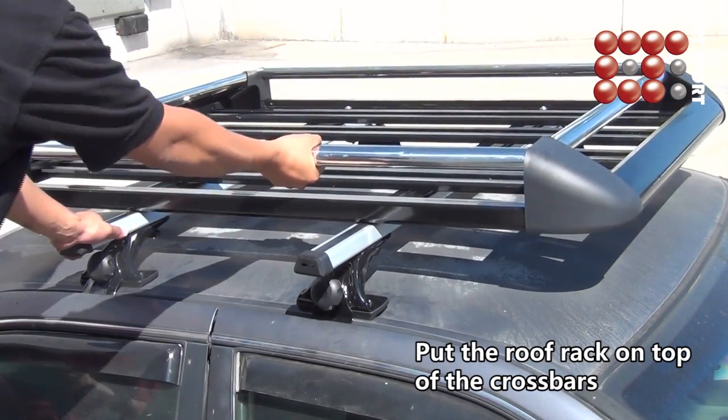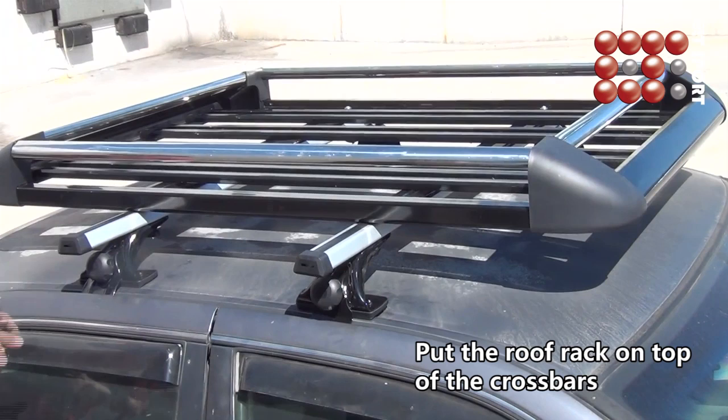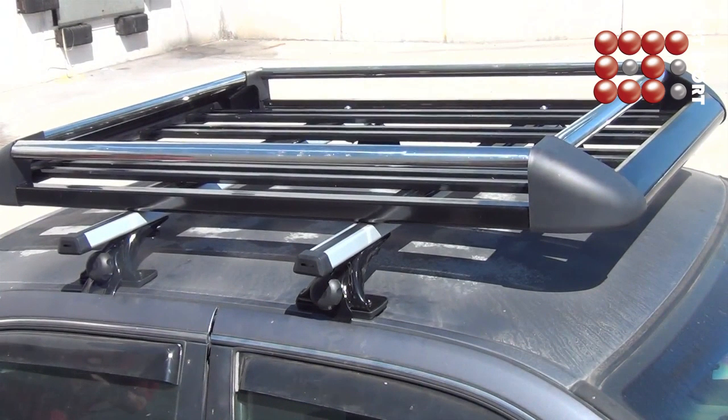Note: if the rack did not align with the crossbar, you might need to relocate the crossbar to align with the roof rack. This only applies to vehicles with adjustable crossbar.